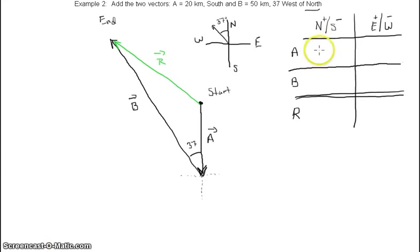If we look at vector A, vector A goes south 20 kilometers, so we will put 20 kilometers in our chart. East and west it goes nowhere. Now if we look at vector B, vector B goes two directions: it goes west and it goes north, so we're going to have to draw our components going west and north for vector B.